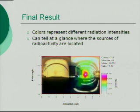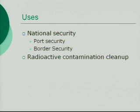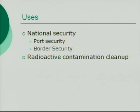You can tell how useful this would be because you can tell at a glance, even if you don't know anything about radiation detection, where in the room a source of radiation would be just by looking at this. This could be used for national security purposes — port security, detecting the movement of radioactive materials, as well as border security. It's also useful for the cleanup of radioactive contamination: just place the detector in an area and you can very quickly and easily get a picture of where all the sources of radioactivity are in the room.